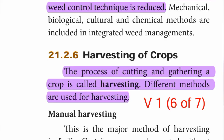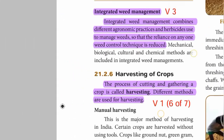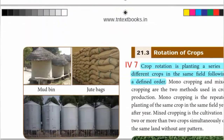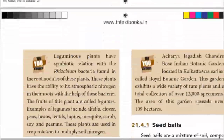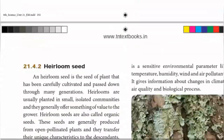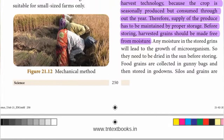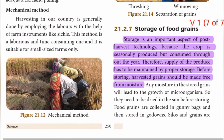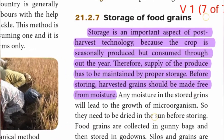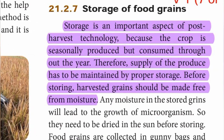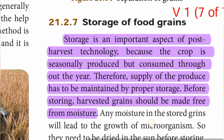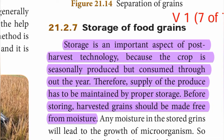Sixth point — harvesting of crops: The process of cutting and gathering a crop is called harvesting. Different methods are used for harvesting. Seventh point — storage of food grains: From page 250, storage is an important aspect of post-harvest technology because the crop is seasonally produced but consumed throughout the year.